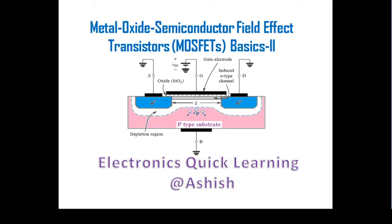In our last video lecture, we covered metal oxide semiconductor field effect transistor basics, in which we covered the simple circuit symbol representation of an NMOS and what the symbol signifies — the gap signifies the oxide layer, the broken line signifies the absence of channel. In this presentation, we will again cover the operation of a MOSFET.